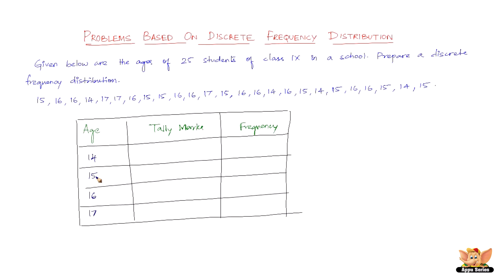The first value is 15, so opposite to 15 let us write one bar. The second is 16, so opposite to 16 one more. Then 16, so another bar opposite to 16. Then 14, so one bar opposite to 14. Then 17, one bar; another 17, another bar opposite to 17. Then 16, another bar. Then 15, a bar. Another 15, another bar. Then 16 — a bar — and this is going to be the fifth one, so we draw it diagonally across the four, counting as five.